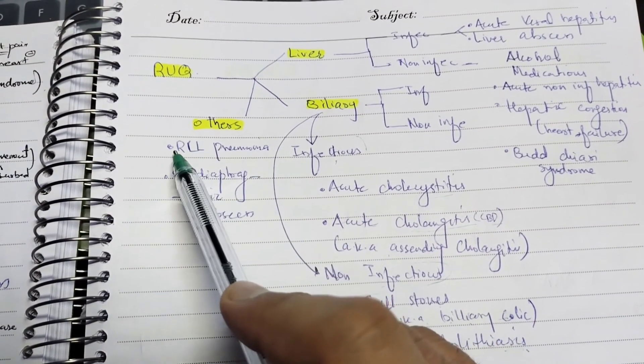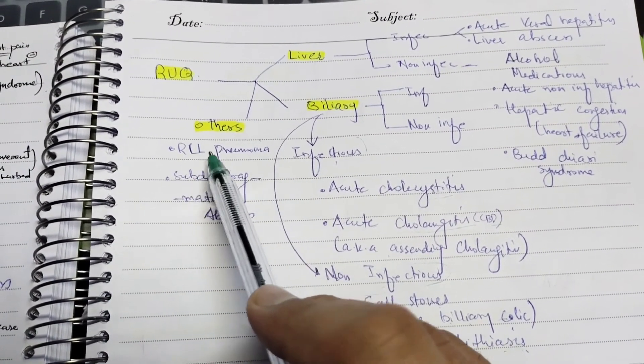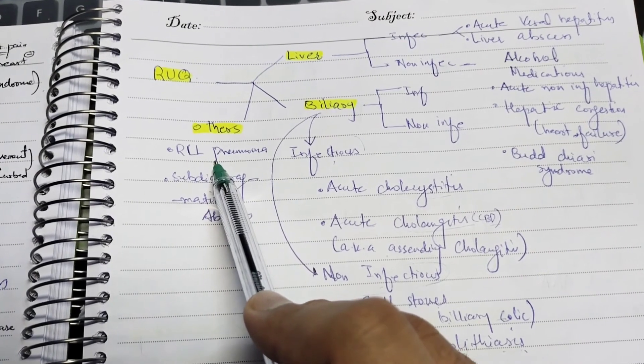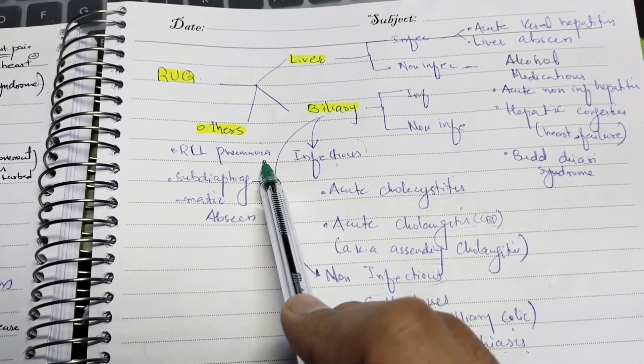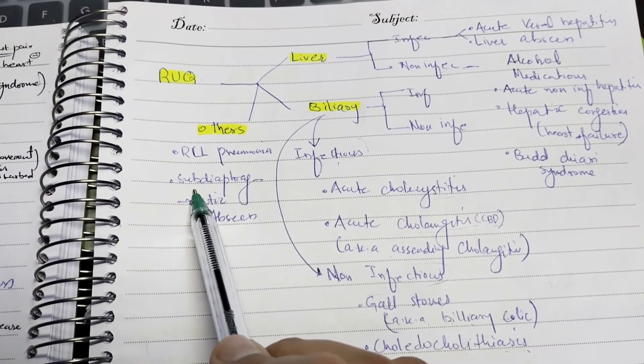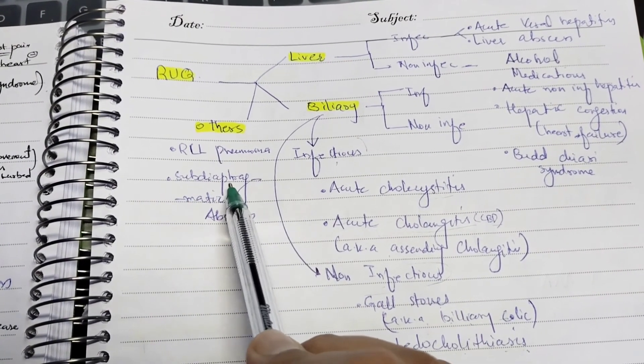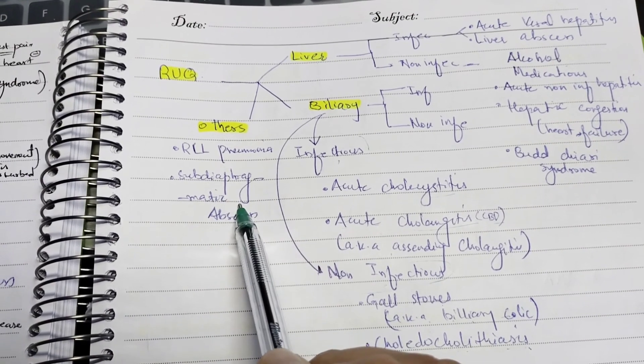Under the 'others' category for right upper quadrant pain, we have right lower lobe pneumonia and sub-diaphragmatic abscess.